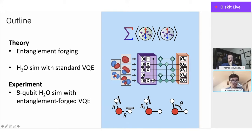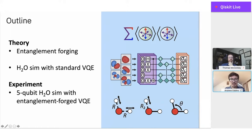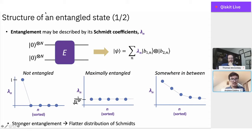Here's a quick outline of the talk — roughly a theory and experiment section. In the theory section, I'll talk about entanglement forging, the procedure, and entanglement background. I'll also discuss how you can simulate a molecule — specifically the water molecule H₂O — with a conventional application of the variational quantum eigensolver (VQE) without entanglement forging. Then we'll combine these two elements in discussing our experimental results: using 5 physical qubits to simulate essentially a 10 qubit problem, where we use entanglement forging to run VQE on the water simulation.